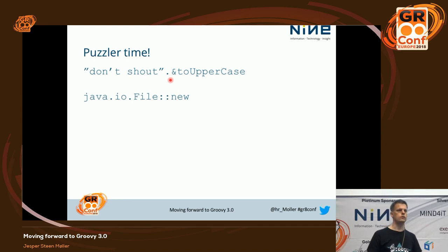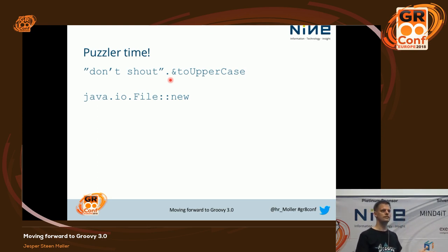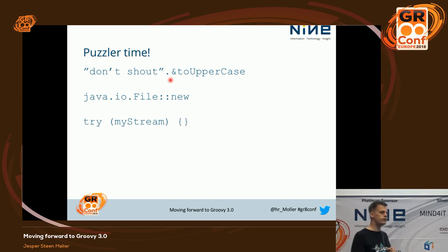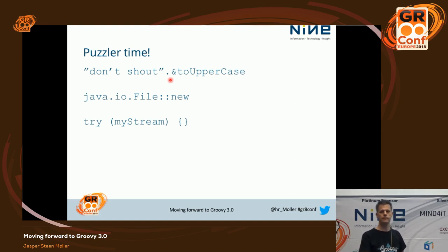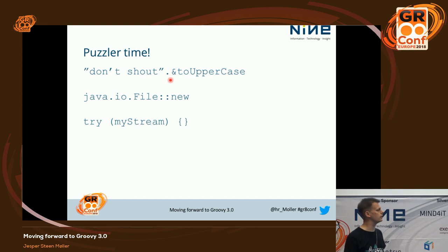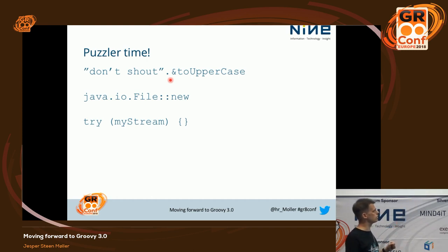How about this one? That's Java — it's a constructor reference. Has anybody seen this? It's a very new-ish construct. It's not Java 7 — it's Java 9, right? It's basically try-with-resources but without initialization, so that statement just closes my stream.